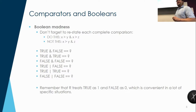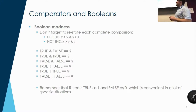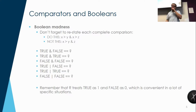True AND false equals false. True AND true equals true. False AND false equals false. True OR false equals true. True OR true equals true. False OR false equals false. This will become more important when we get into advanced comparators like exclusive ORs. But these are the ones you should definitely be familiar with for now.